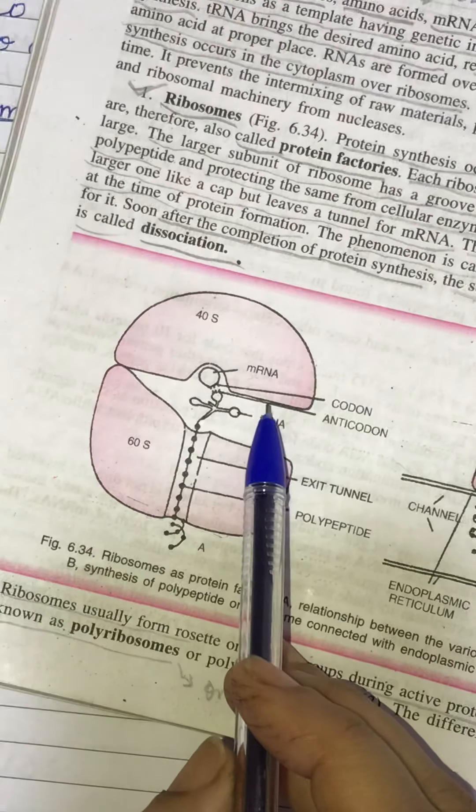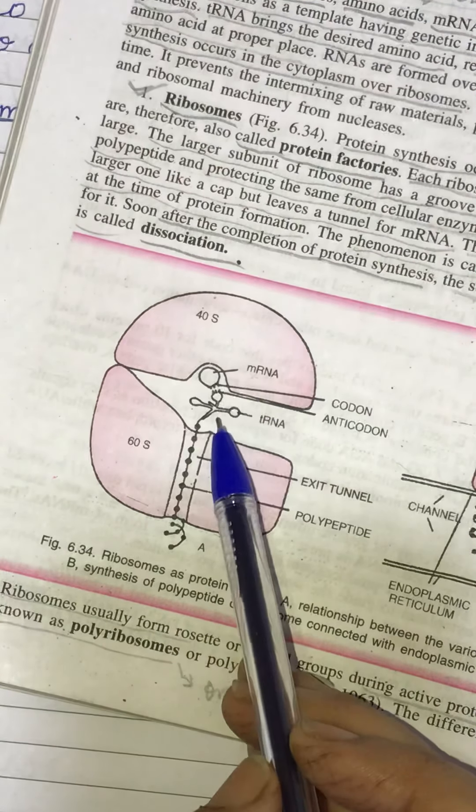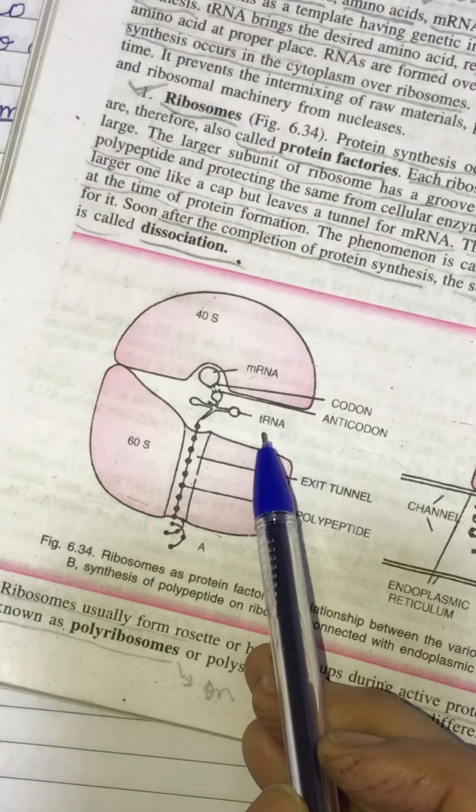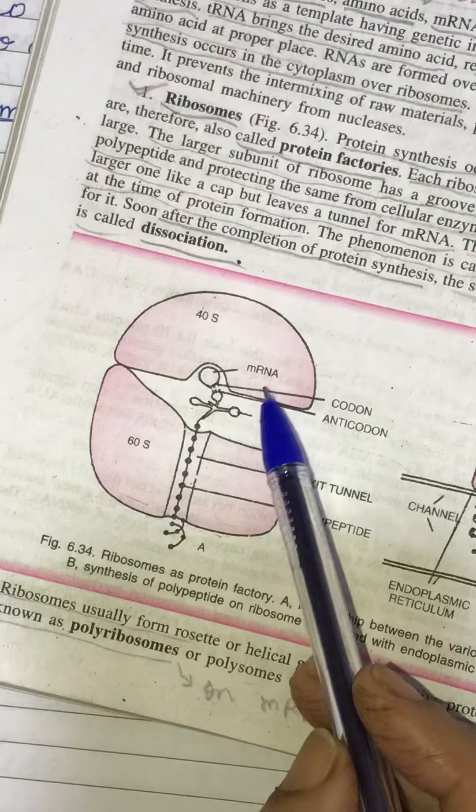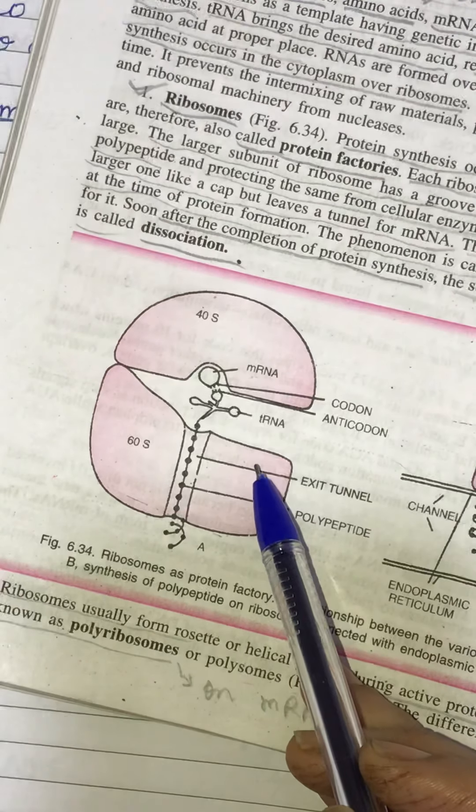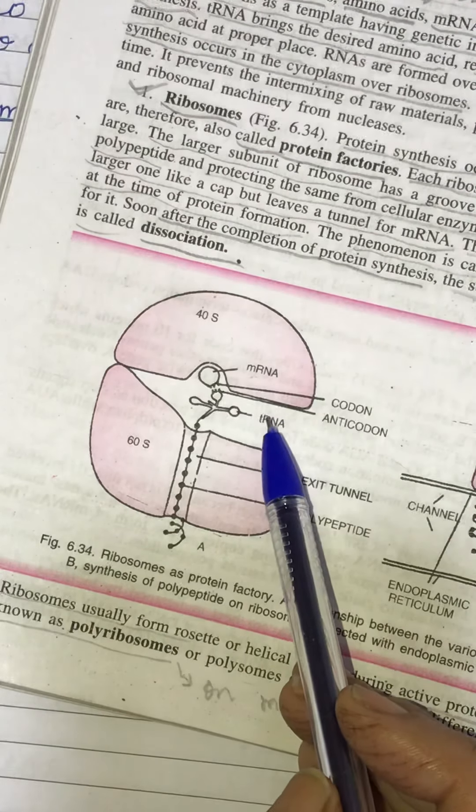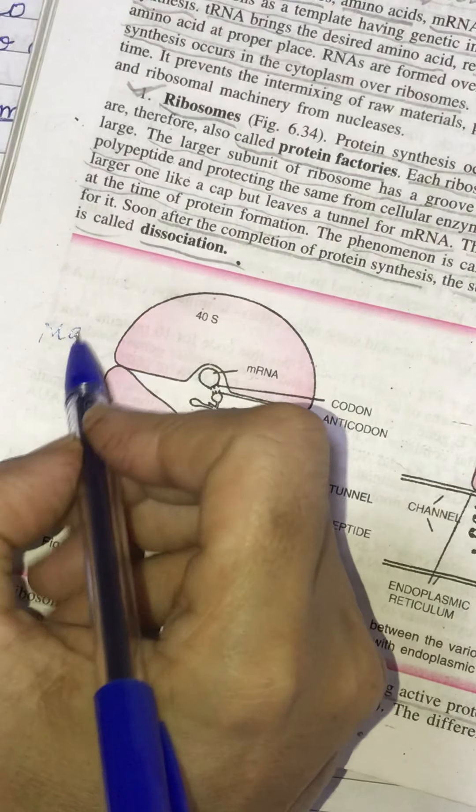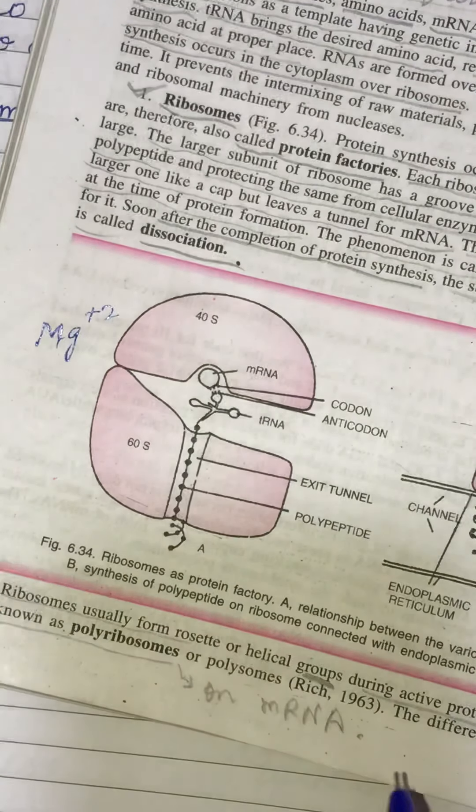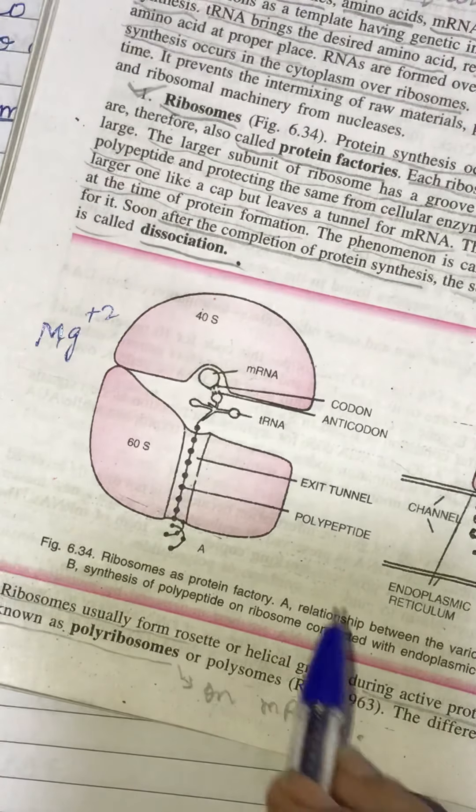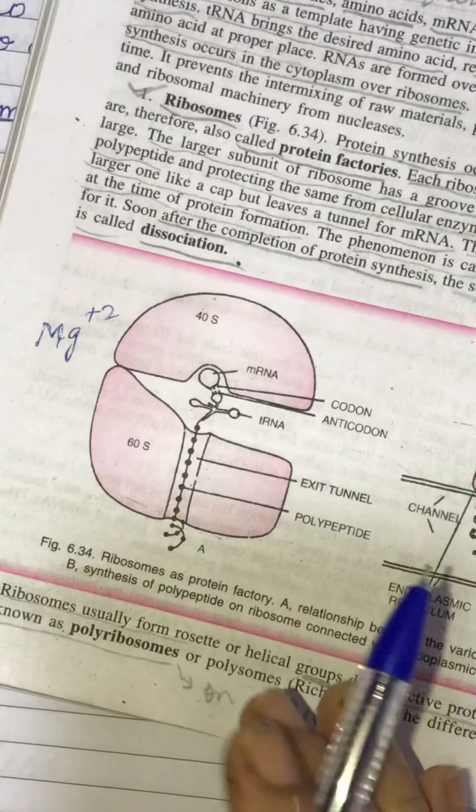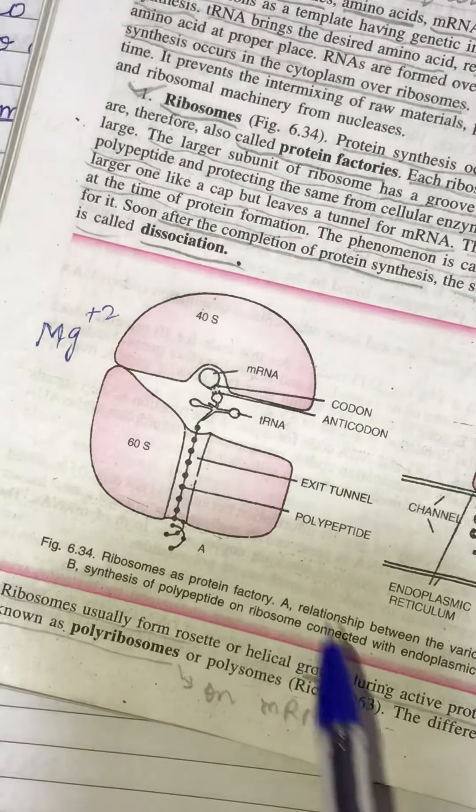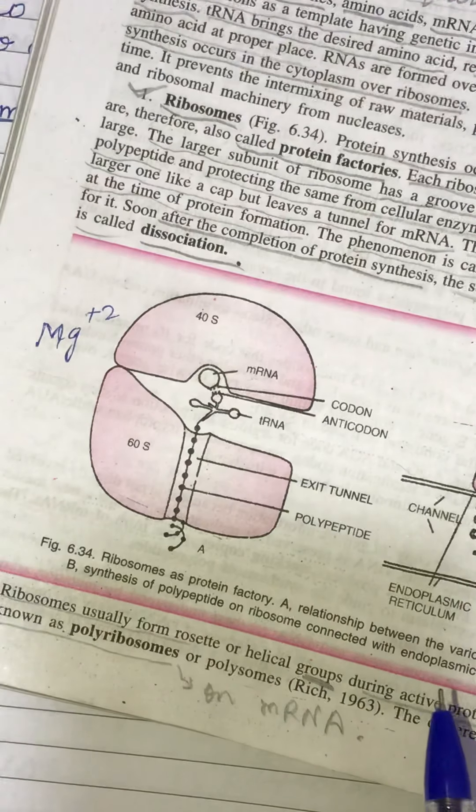Now the two subunits, they come together only at the time of protein synthesis. Otherwise, they remain as separate units. And when they come together for protein synthesis, this process is called association. And for that, magnesium ions are required. And when the protein synthesis is completed, then these two subunits separate. And this phenomenon is called dissociation.